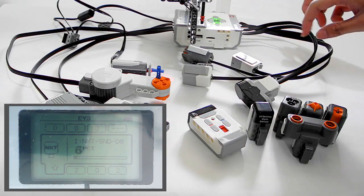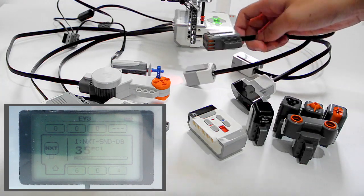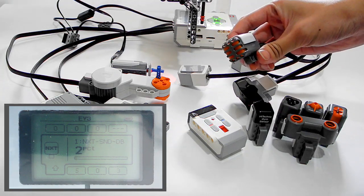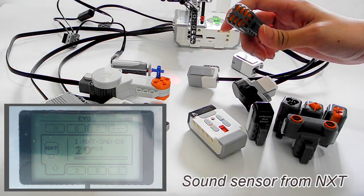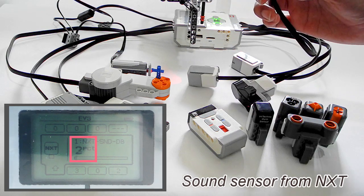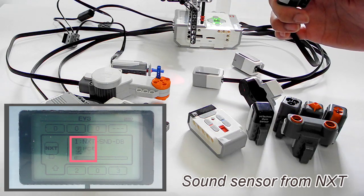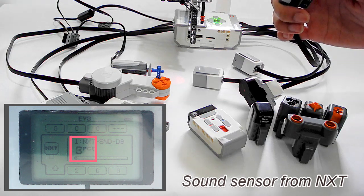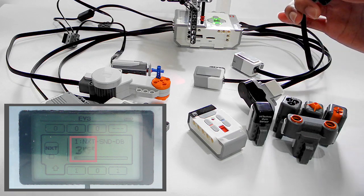And at once, the first one is the NXT sound sensor. And you can see when I am speaking, the number moves, going lower and higher, and it is measuring my sound's influence, the level of my sound.